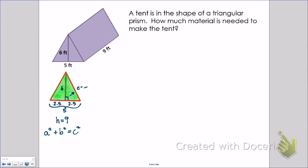So I write down my Pythagorean theorem, and then I write down what I know. I know that one of the short sides is 2.5, the other short side is 6, and the third side is the one I'm missing, so I leave it as C.